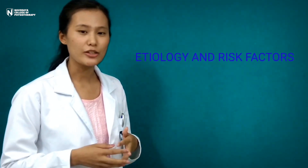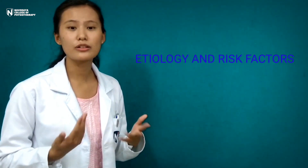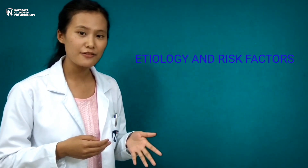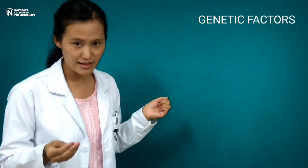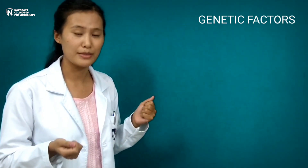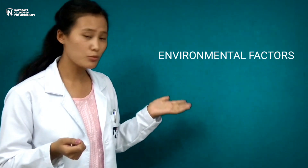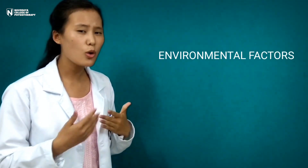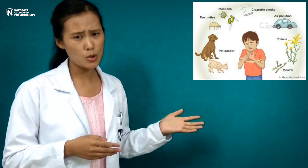Now its etiology and risk factors. The exact cause of asthma remains obscure but it is generally believed to result from a combination or interaction between genetic factors and environmental factors. Genetic factors include certain genes and their susceptibility to the disease, and it also shows some association with family history. Environmental factors include exposure to tobacco smoke, and triggering factors such as animal danders, dust, pollen, grains, malts, etc.